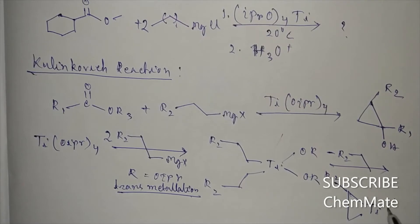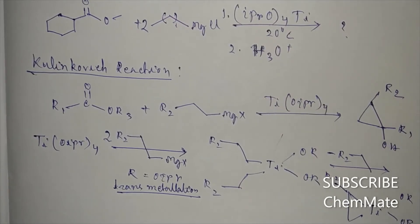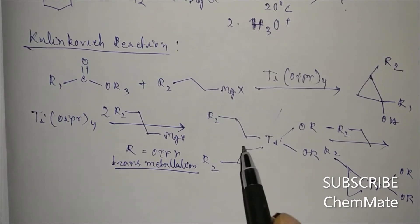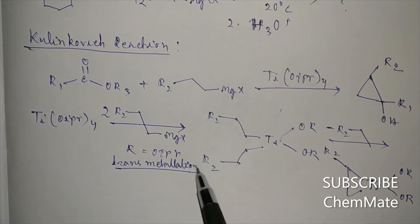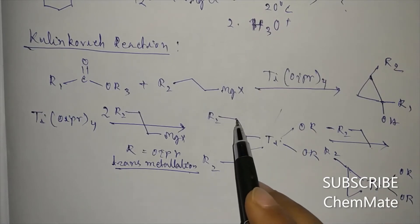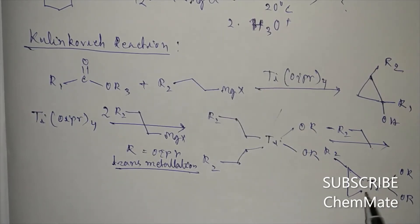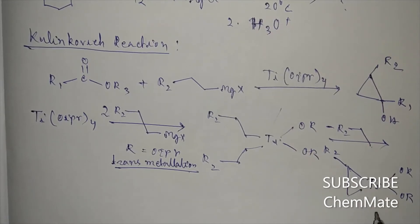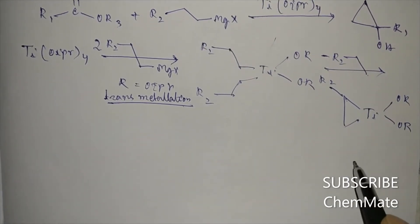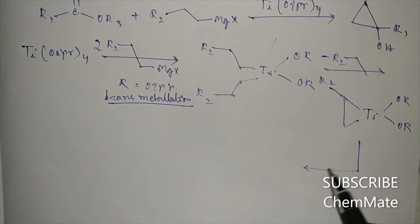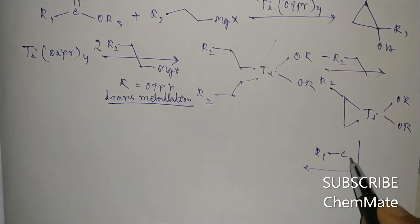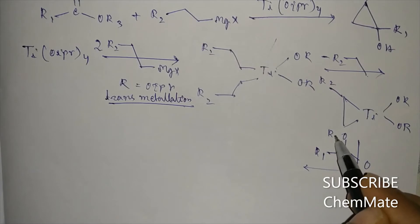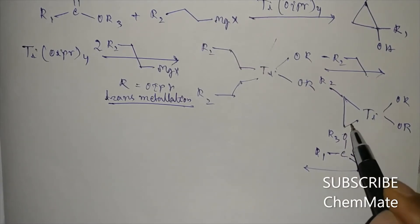An intermediate is formed where one hydrogen is transferred, and the R2-CH2-CH3 group is removed. This bond connects to titanium, and a three-membered ring — a titanacyclopropane intermediate — is formed. This intermediate then reacts with the ester R1-C=O-OR3.